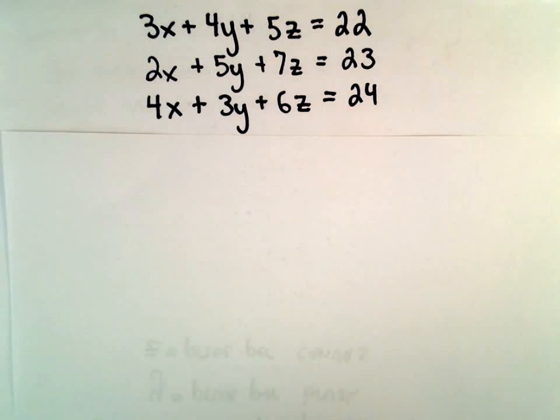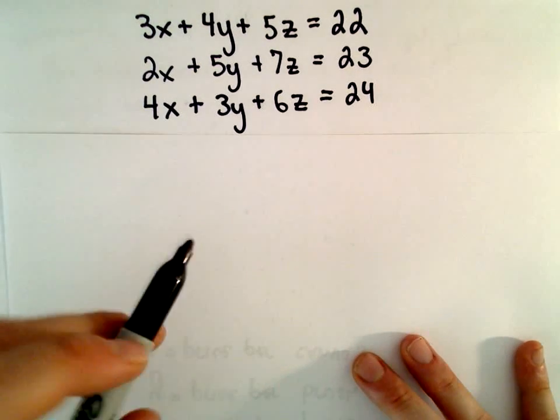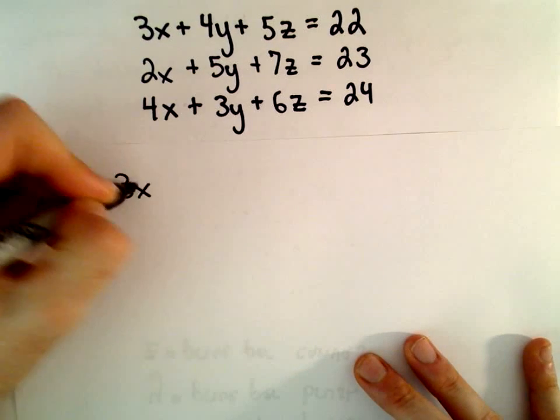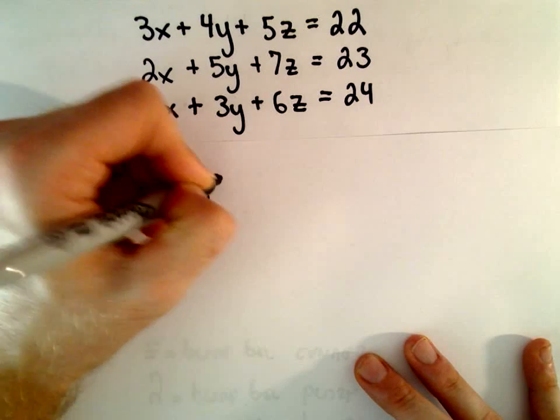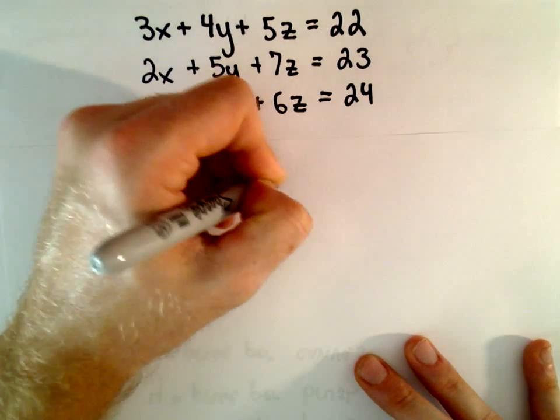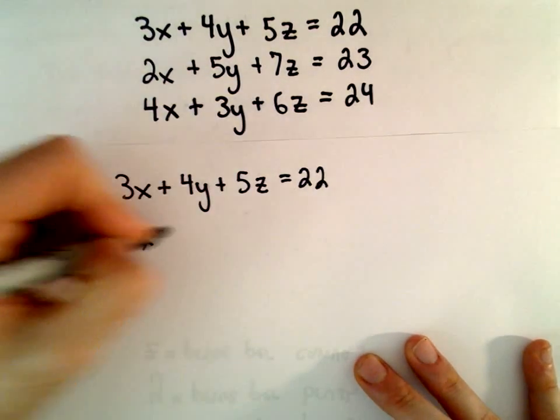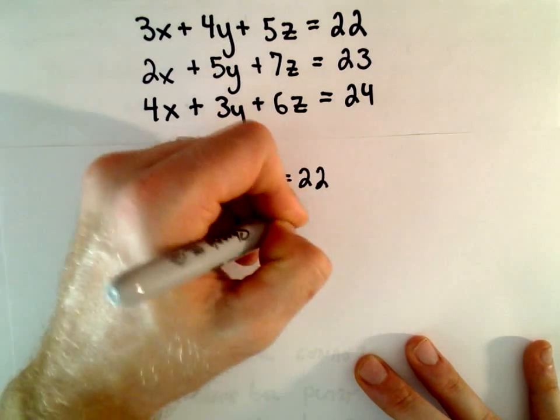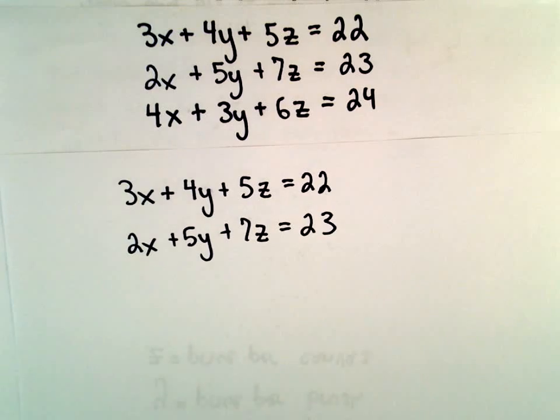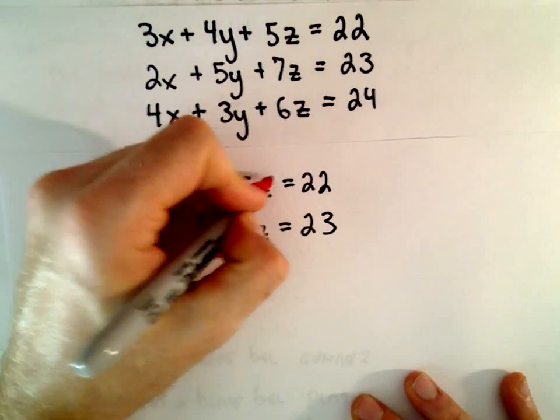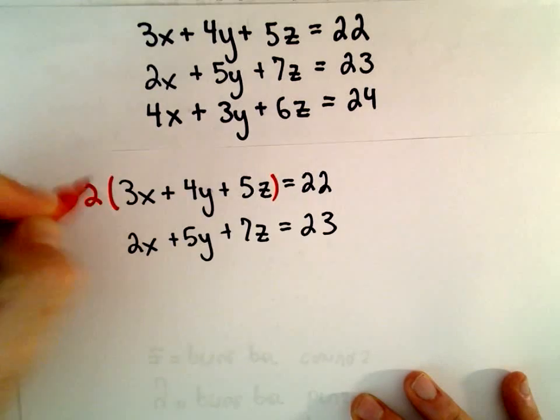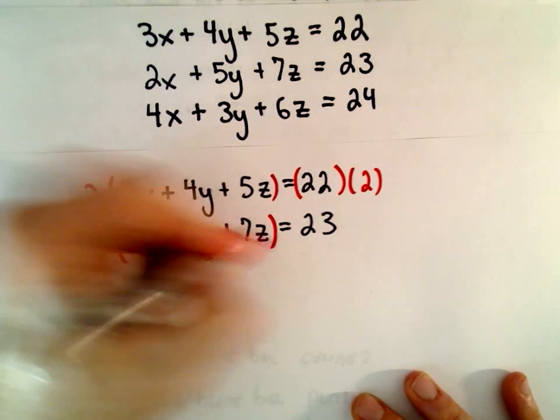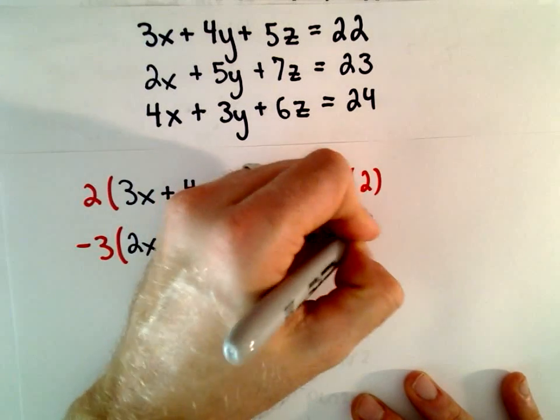What I'm going to do is create two new equations that don't involve X. So I'm going to take our first two equations. I'm going to multiply both sides of our first equation by positive 2, and the second equation I'm going to multiply both sides by negative 3.